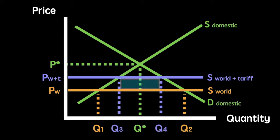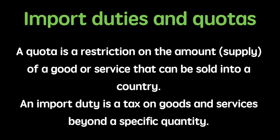The area represented by the shaded blue rectangle is the tariff revenue to the government, whereas the two red triangles represent the deadweight loss of imposing the tariff. A quota is a restriction on the amount of a good or service that can be sold into a country. An import duty is a tax on goods and services beyond a specific quantity.